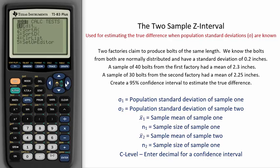To find it on the TI calculator, go to STAT, then over to TESTS, and then down to two-sample z-interval.